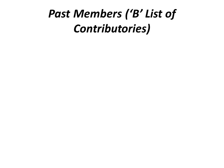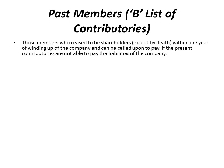Next, past members. Past members are coming under the B list of contributors. Those members who ceased to be shareholders within one year of the winding up of the company can be called upon to pay if the present contributors are not able to pay the liabilities of the company.